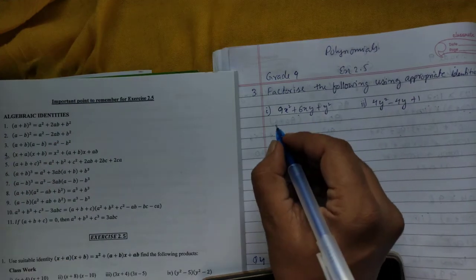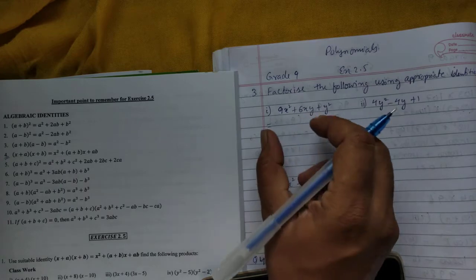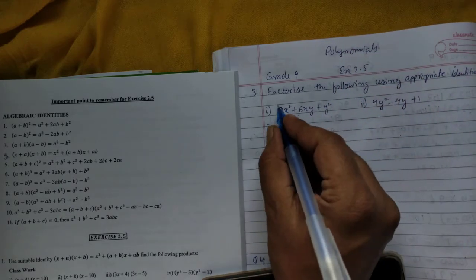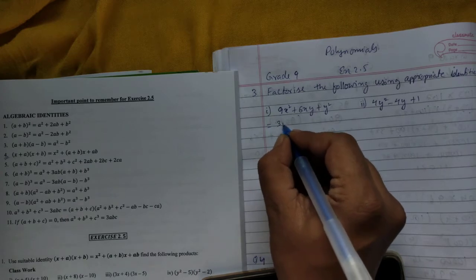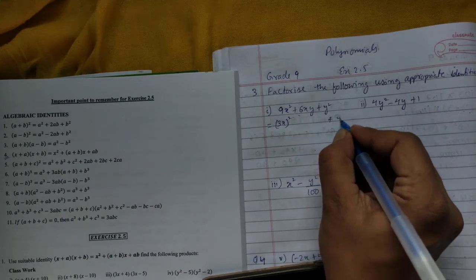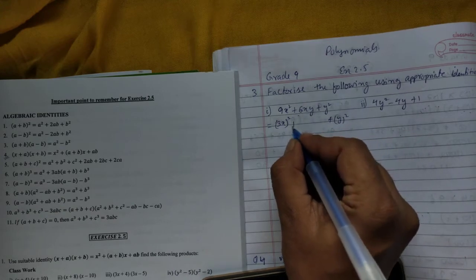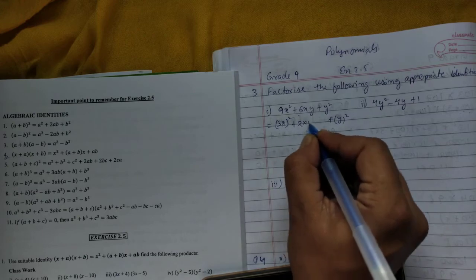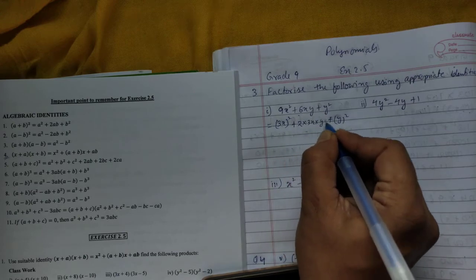Check whether you can make two terms into perfect squares. Yes, this is (3x)² and this is y². In the middle, we need 2AB. This becomes A, this becomes B. So 2 times A, which is 3x, times B, which is y, gives